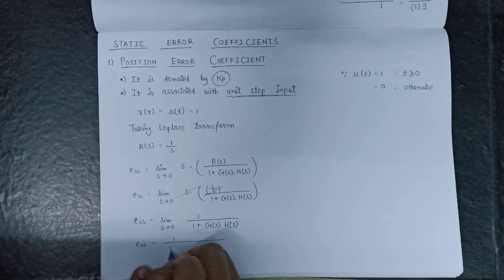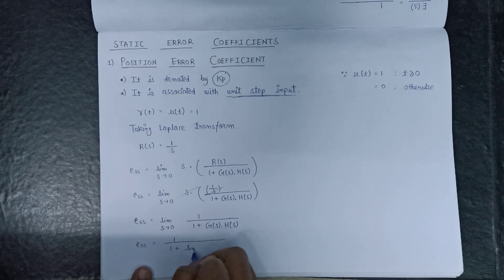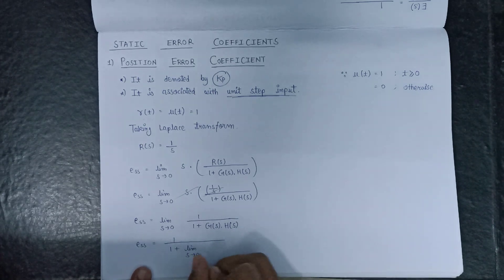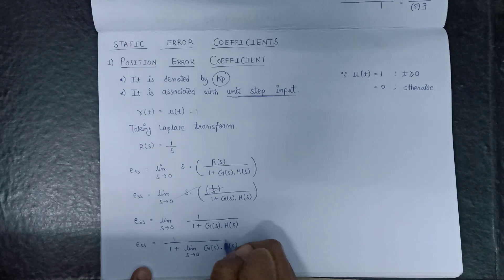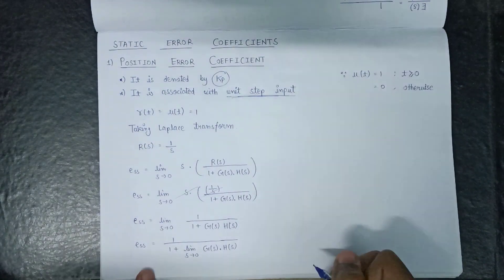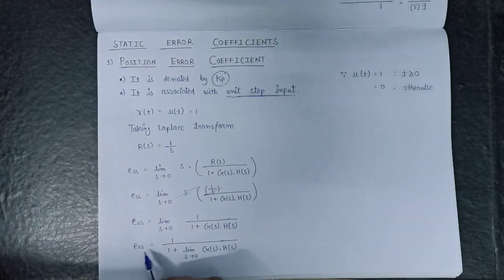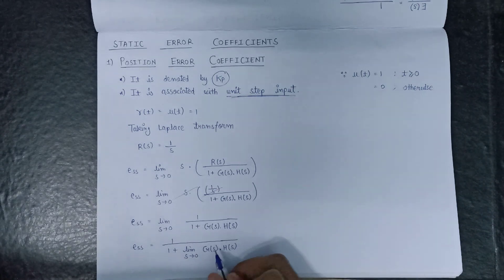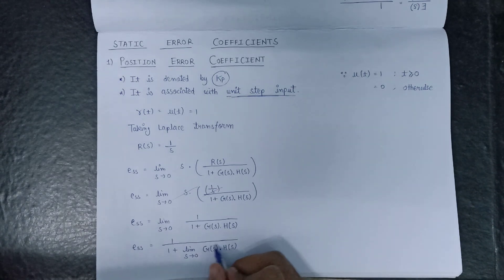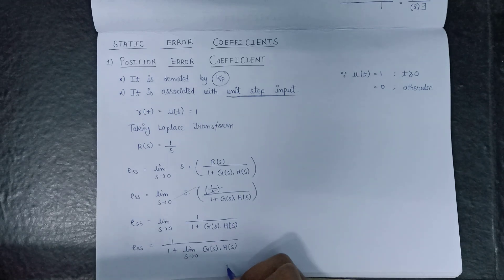That's why this term, that is limit s tends to 0 G(s) into H(s), is nothing but positional error coefficient.